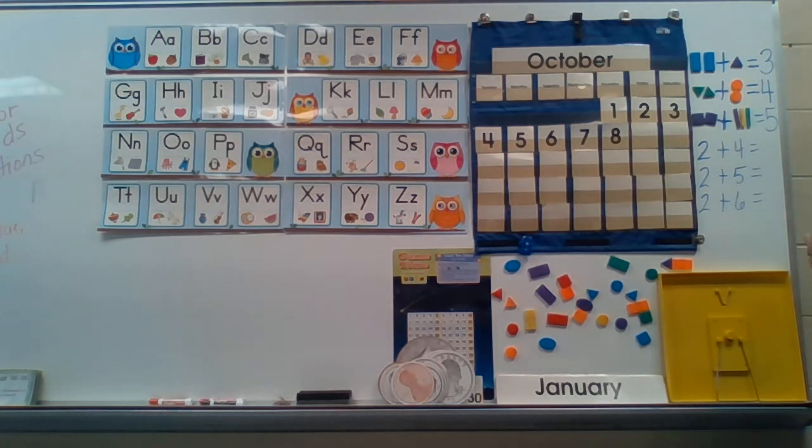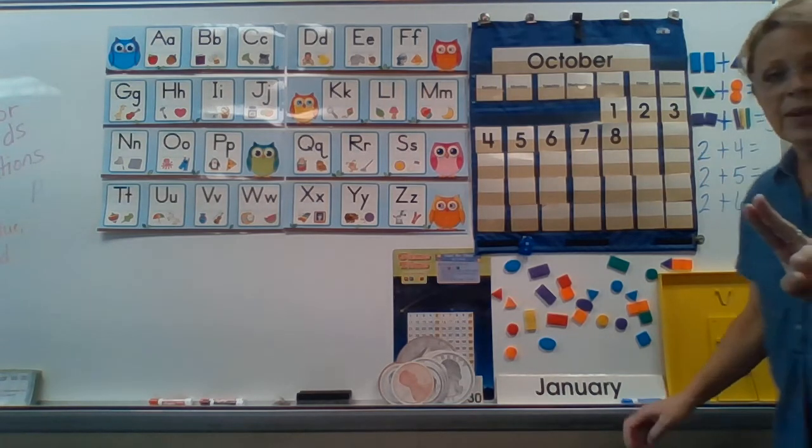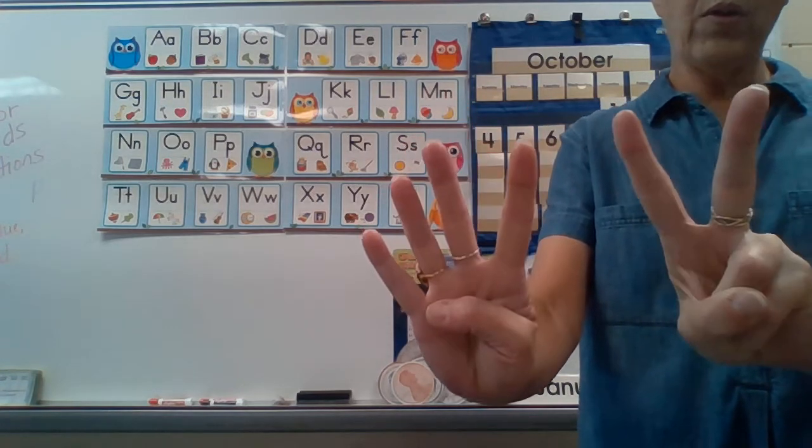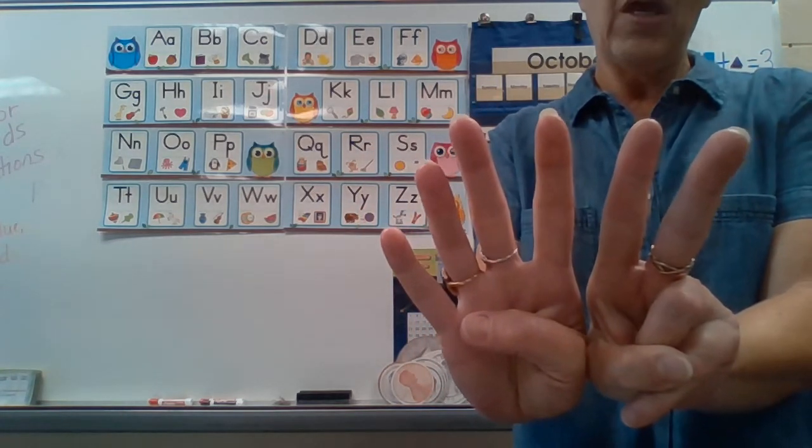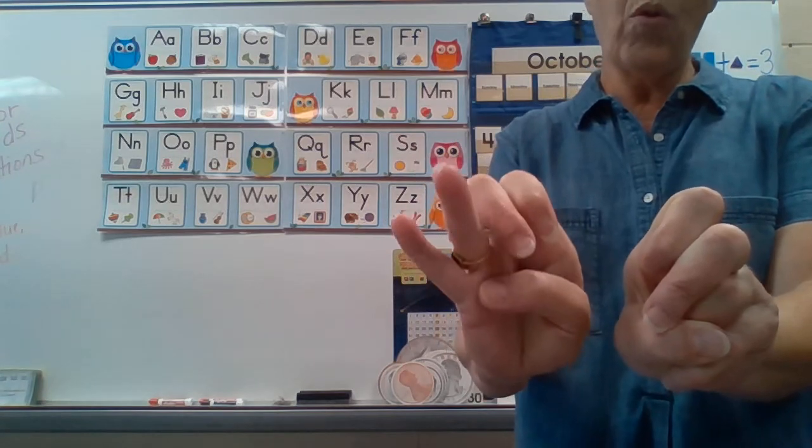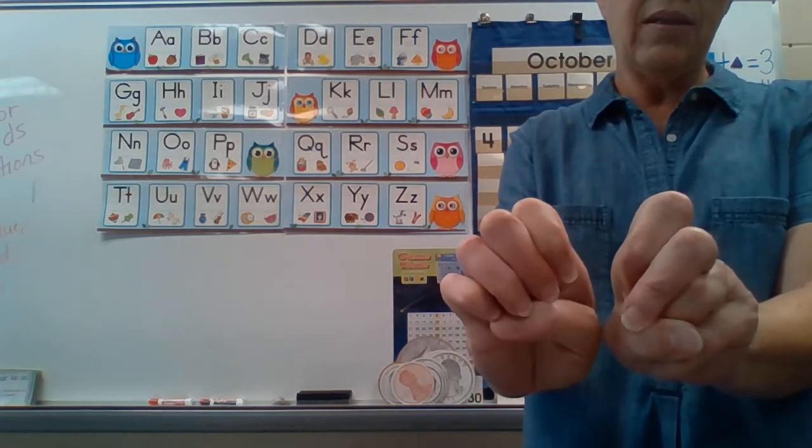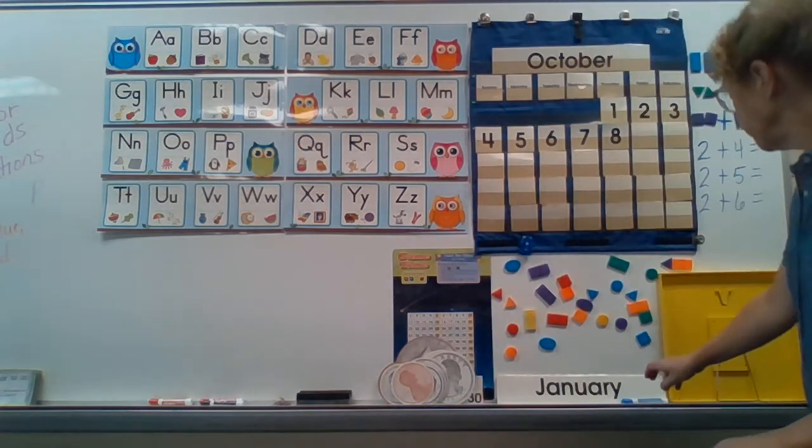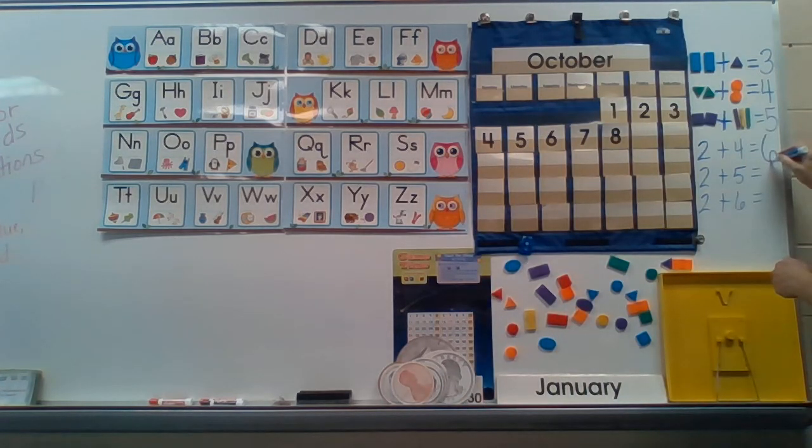Now, I've switched over to numbers here. So, my equation says two plus four. So, I'm going to put, you try this. Put up two fingers on one hand and four fingers on another hand, just like this. Put them up just like this. Two plus four more. Do you have your fingers up? All right. Now, when it says plus, it means put them all together. So, we've got to count them all together. So, I'm going to start counting over here, okay? One, two, three, four, five, six. Did you count that many? Two and four more equals six all together. Put six up there.